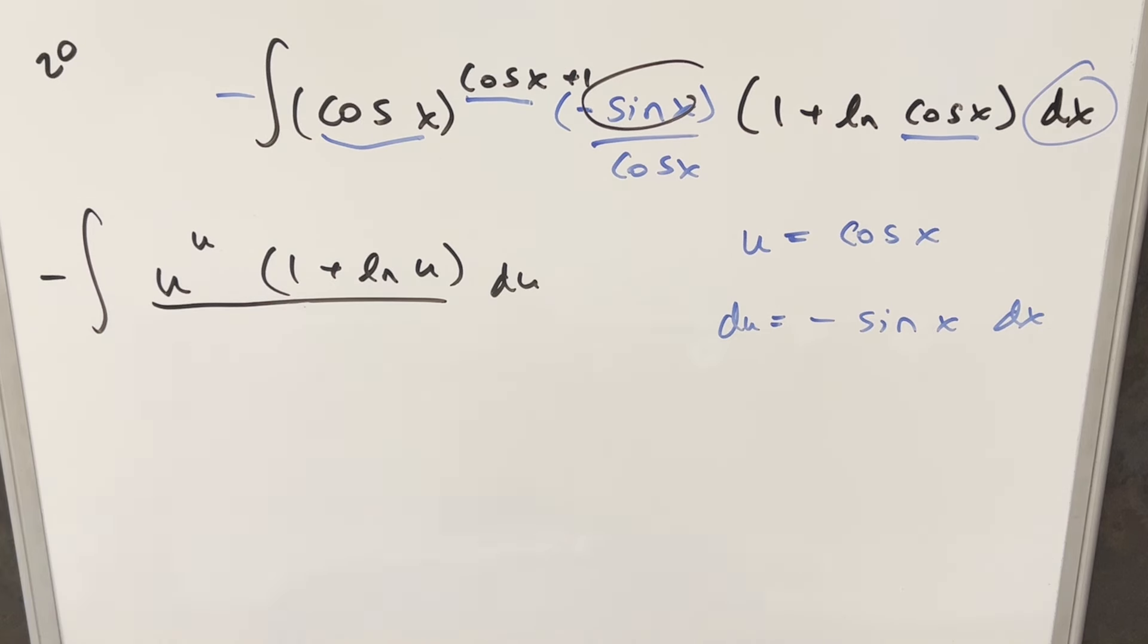And now this is starting to look pretty familiar because I've come across a lot of problems where we've had x to the x. And then the question always becomes, I always forget, but it's like, what is the derivative of this thing going to be? And is that going to give us our simplification? So let's do this as another substitution. Let's set this equal to t.